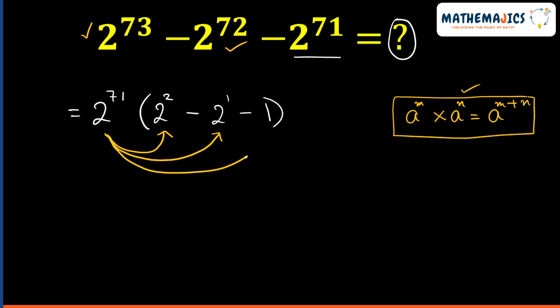2 raised to power 71 times 1, we will get 2 raised to power 71. So in the next step, we will get 2 raised to power 71. 2 raised to power 2 is 4 minus 2 raised to power 1 is 2 minus 1.